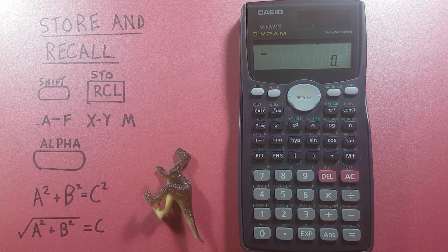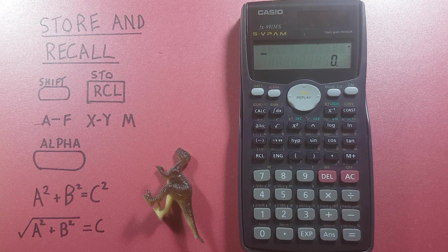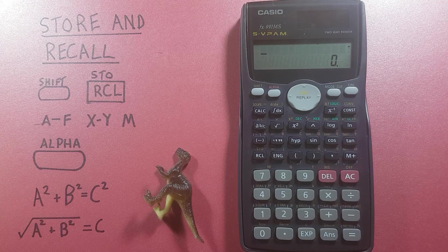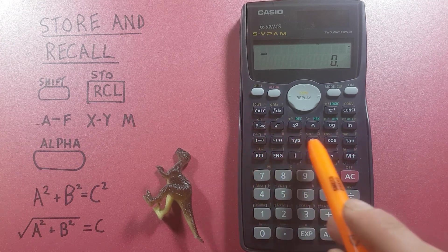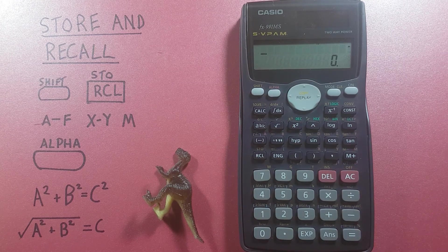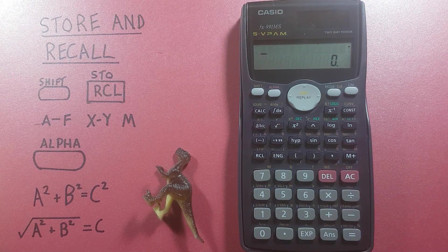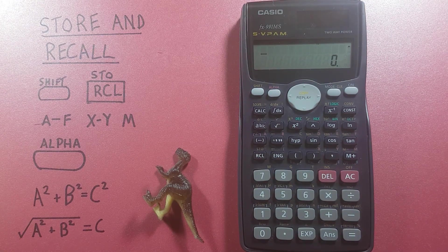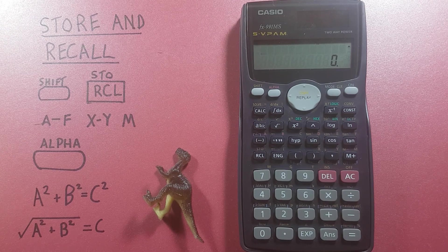We can also recall and use these save functions or slots as an alpha or a letter on our calculator using the alpha key. This is very helpful if you want to use it in a long complex formula or calculation and don't want to have to write out the whole number.